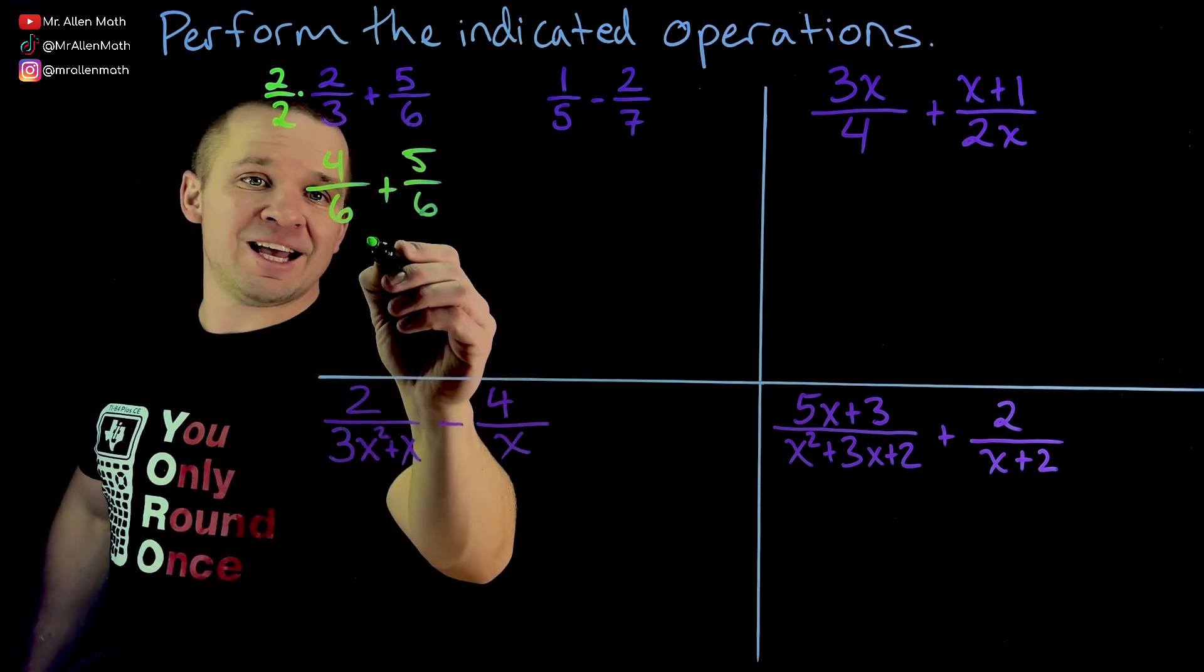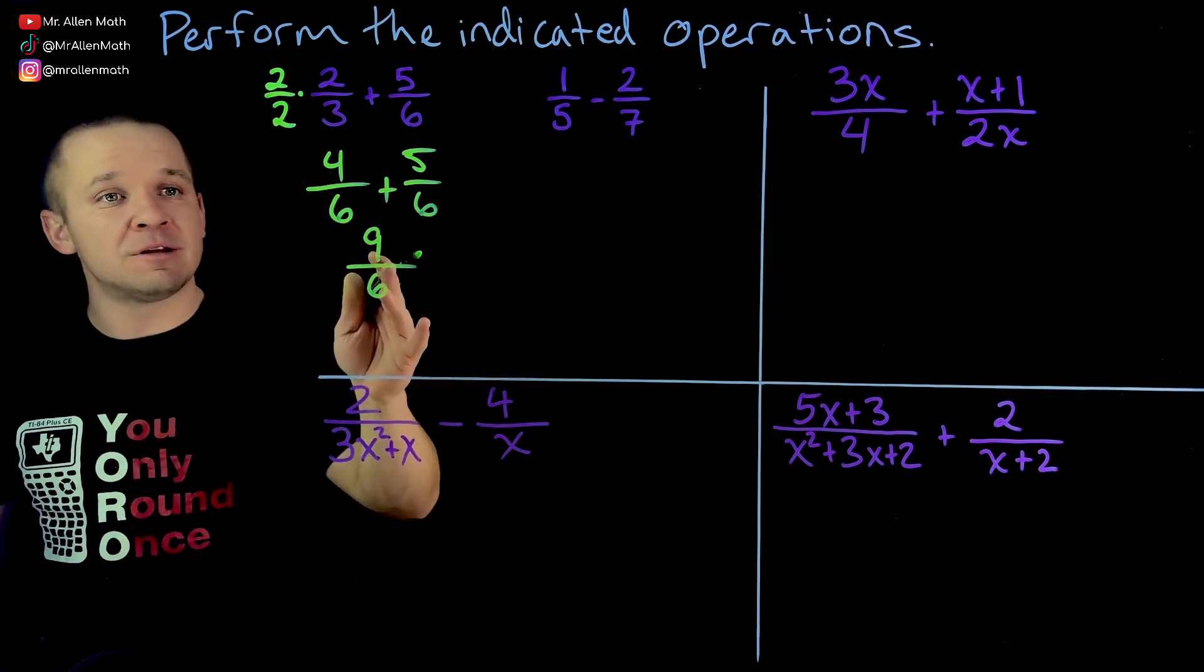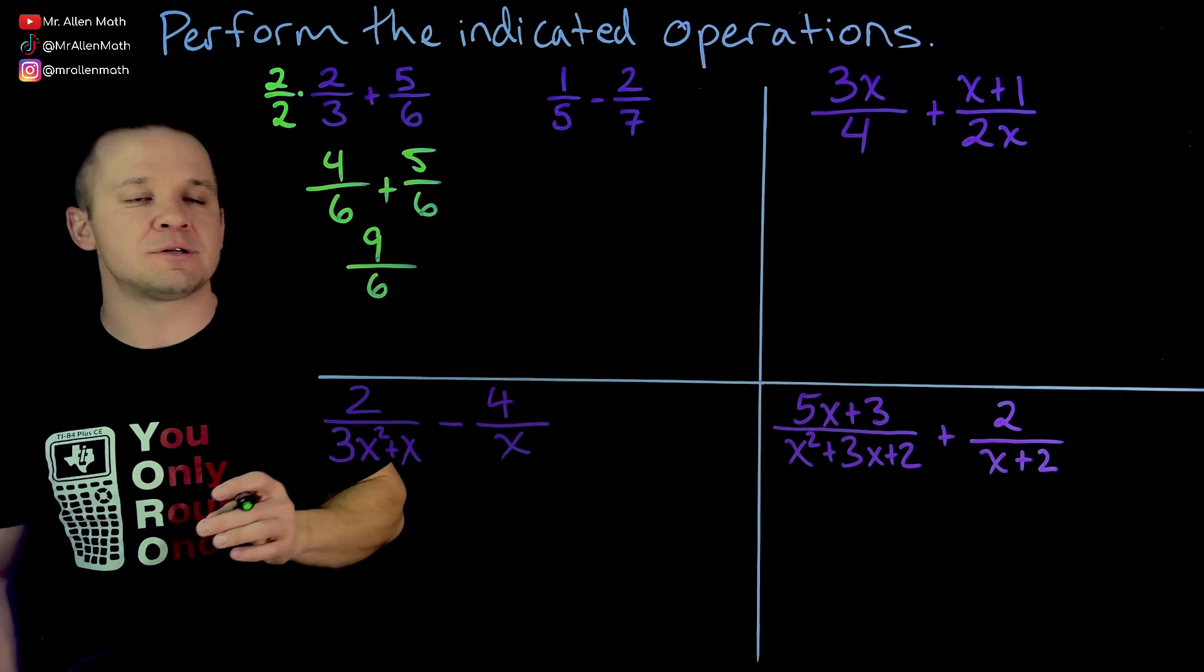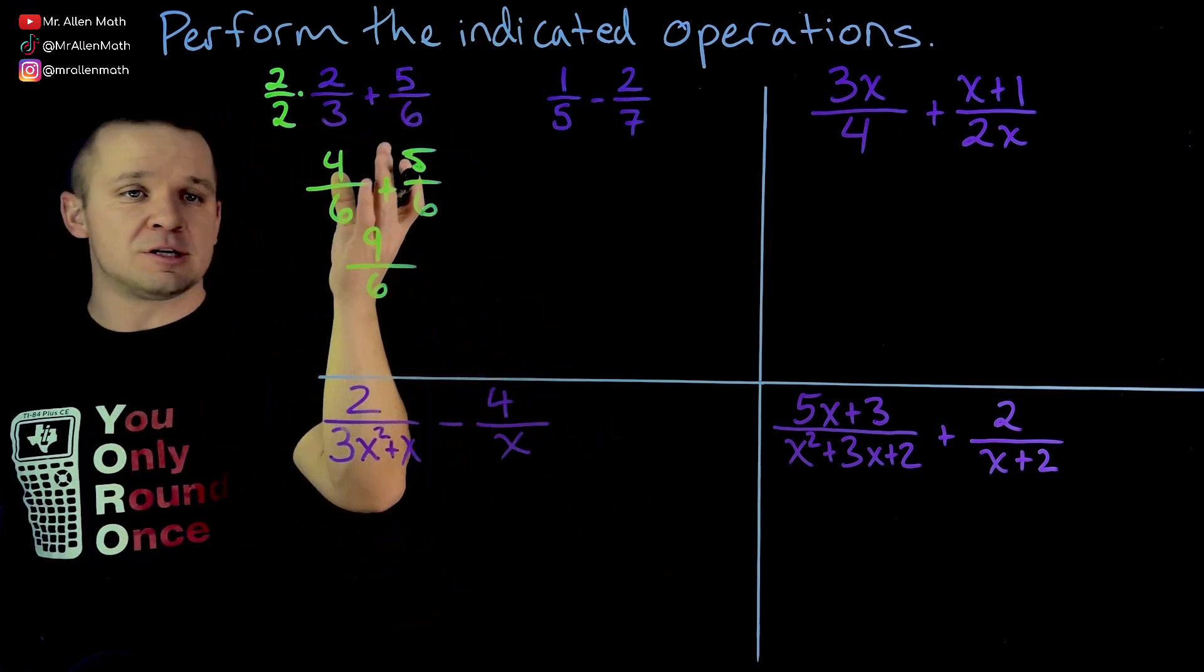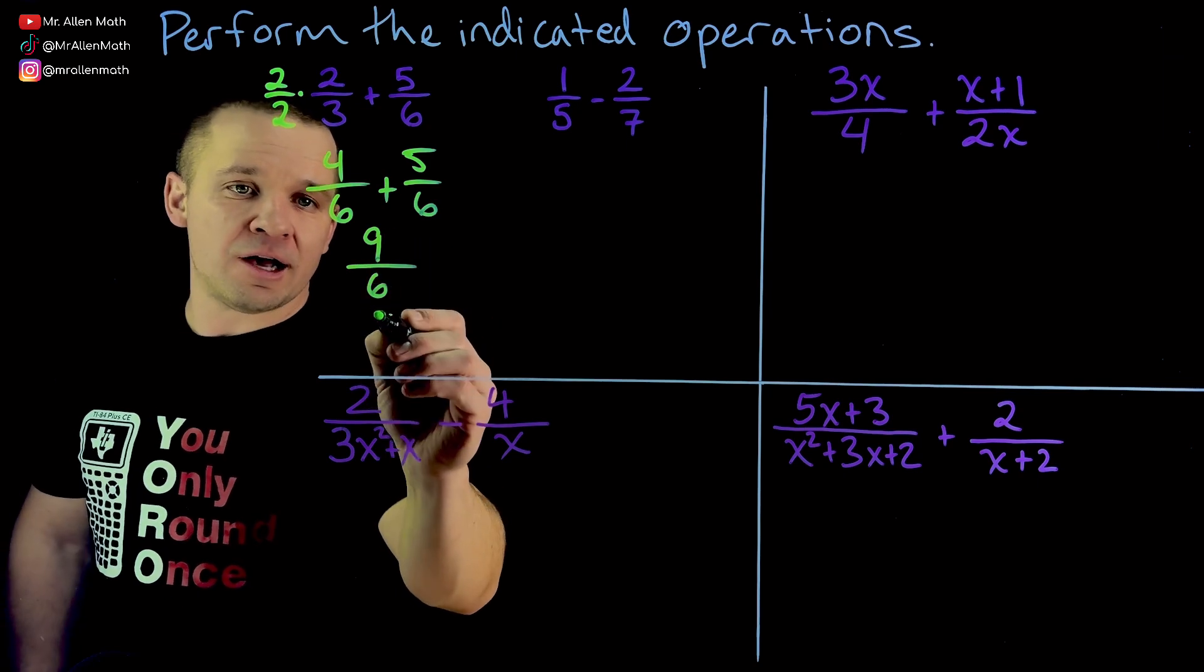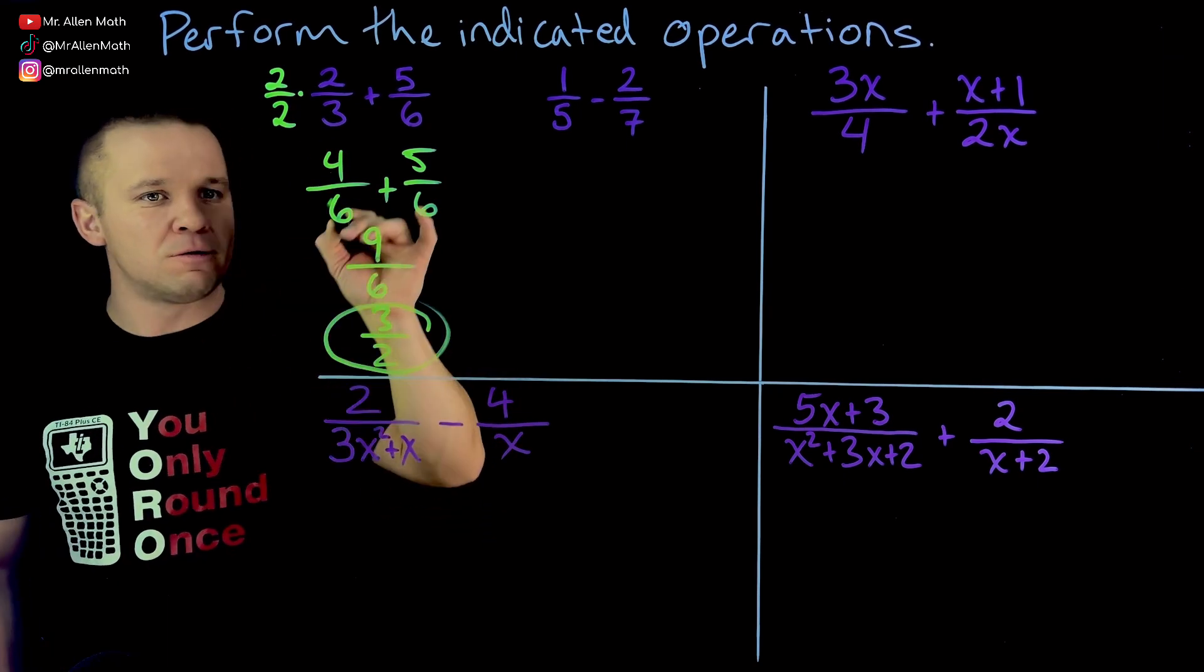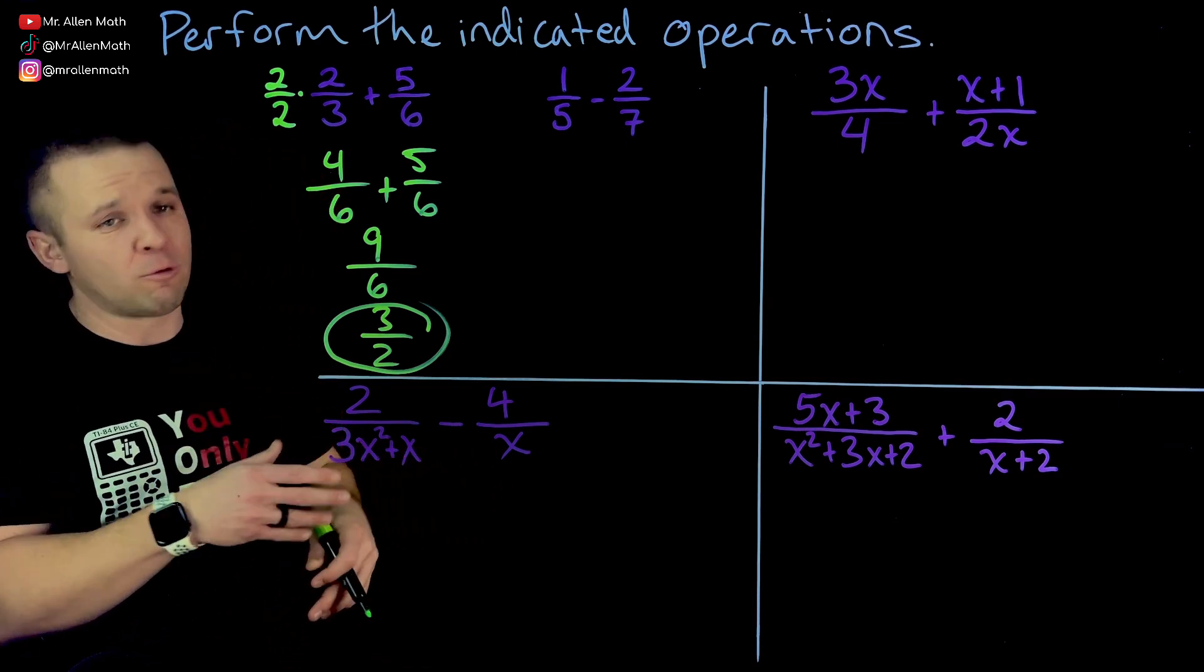I can just add my numerators. Four plus five is nine. Six is my denominator. You do not add the denominators. The denominator just stays the same. We just add the numerators. And then from here, if I can simplify, I will simplify. And I can with this one, they're both divisible by three. So I'll get three over two. I know it's an improper fraction, but I don't care.